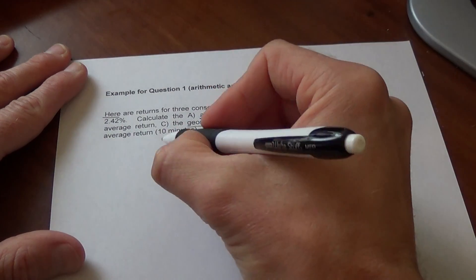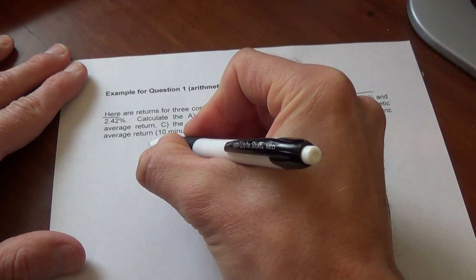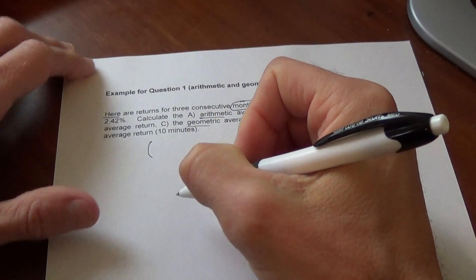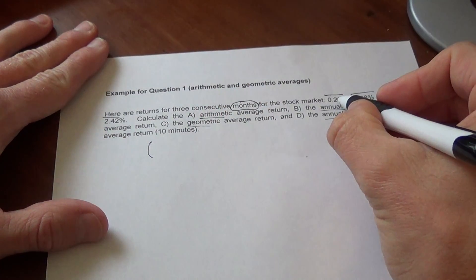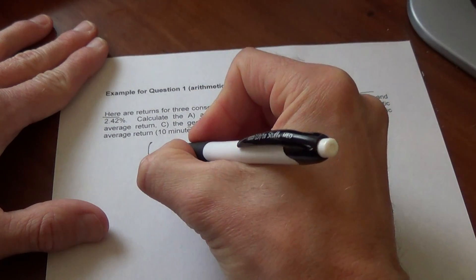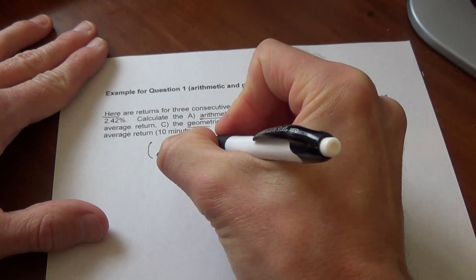We want the average of those three, but I would highly recommend, you have to do it for geometric average, but I'd recommend you do it even for arithmetic. Just be consistent that you convert these percents into decimals. So 0.28% is 0.0028.